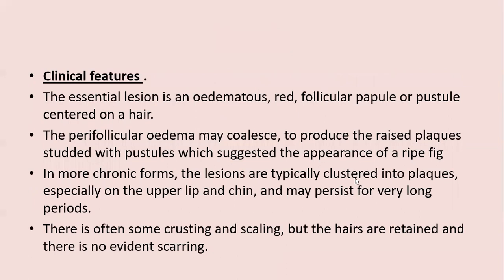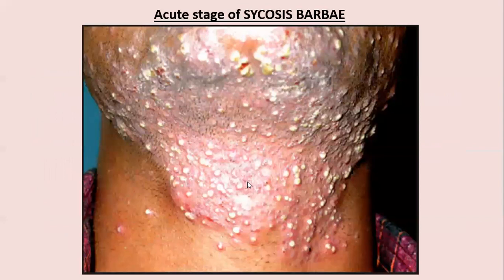The essential lesion is an edematous red follicular papule or pustule centered on a hair. Perifollicular edema coalesces to produce a raised plaque studded with pustules suggesting the appearance of a ripe thick skin. In the most chronic form, lesions are typically clustered into a plaque, essentially on the upper lip and chin, and persist for a very long period. The classical appearance is a plaque with pustules, often some crusting and scaling, but hairs are retained and there is no evidence of scarring. The clinical image shows a large boggy swelling with multiple pustular areas.